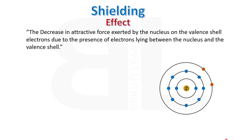Protons present in the nucleus exert a force of attraction on each electron orbiting the nucleus. At the same time, there is another force of repulsion present between the electrons, because electrons are negatively charged and due to the same type of charge they repel each other.